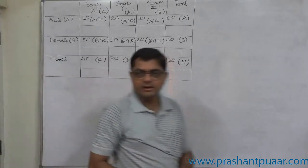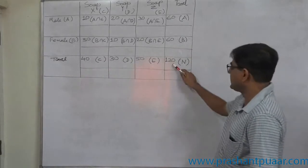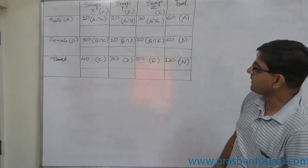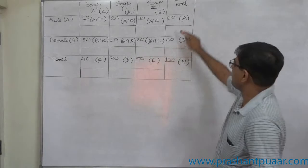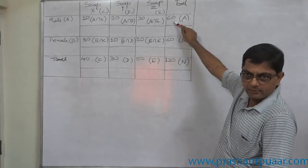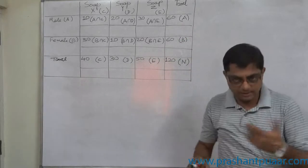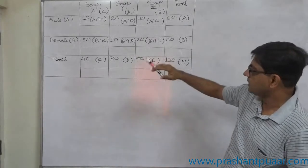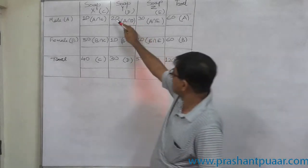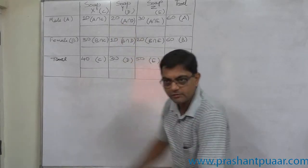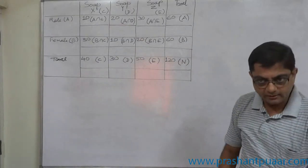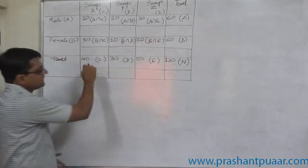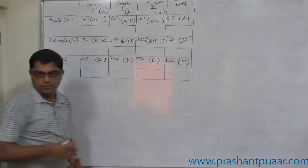If anyone out of these 120 persons is drawn at random, the probability that the person is male is 60 divided by 120. Similarly, the probability that the person is a male user of SOP Y is 20 divided by 120. In that way we can calculate all 6 joint probabilities and all 5 marginal probabilities.